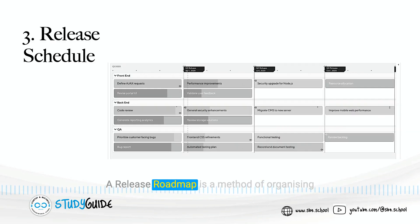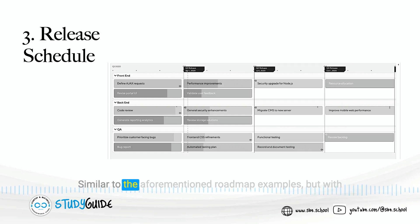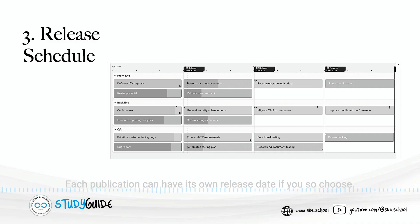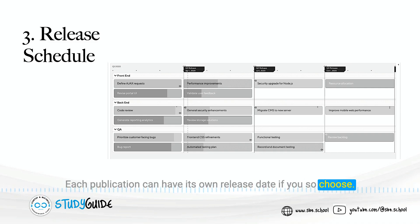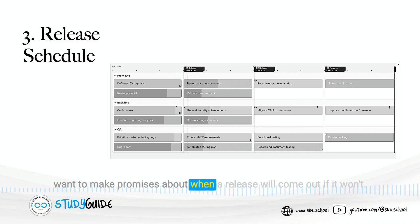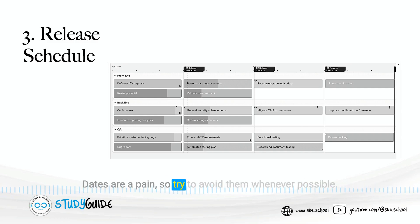A release roadmap is a method of organizing your roadmap according to releases, similar to the aforementioned roadmap examples, but with product releases instead of time or horizons on the x-axis. Each publication can have its own release date if you choose. But keep in mind the drawbacks of dates — you don't want to make promises about when a release will come out if it won't. Dates are a pain, so try to avoid them whenever possible. We'll release whenever we're ready.